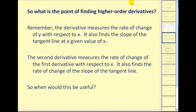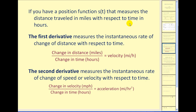If you have a position function s(t) that measures the distance traveled in miles with respect to time in hours, the first derivative would measure the instantaneous rate of change of distance with respect to time. When you measure the change in distance with respect to the change in time, you get velocity — in this case in miles per hour. The second derivative measures the instantaneous rate of change of speed or velocity with respect to time, which gives you acceleration.